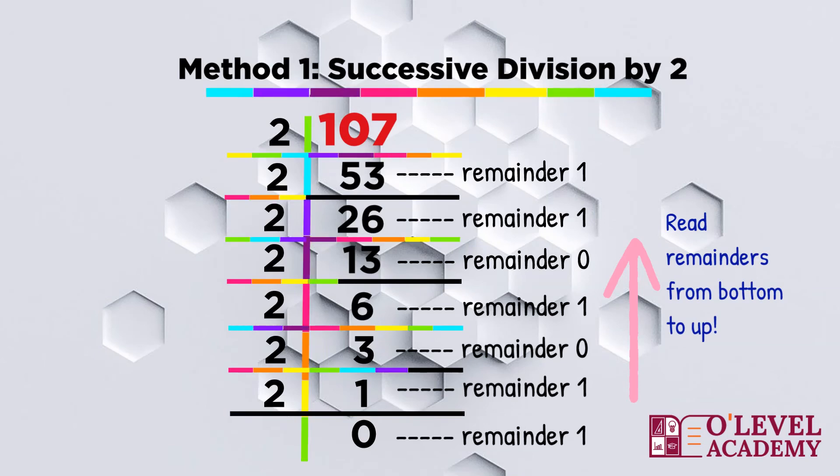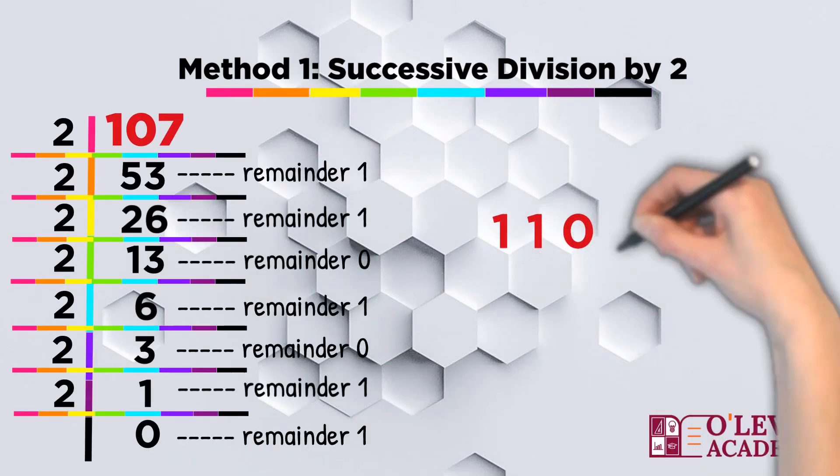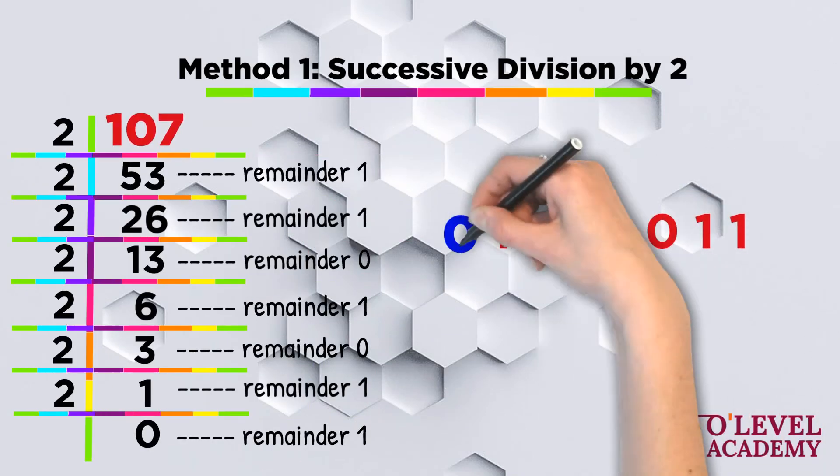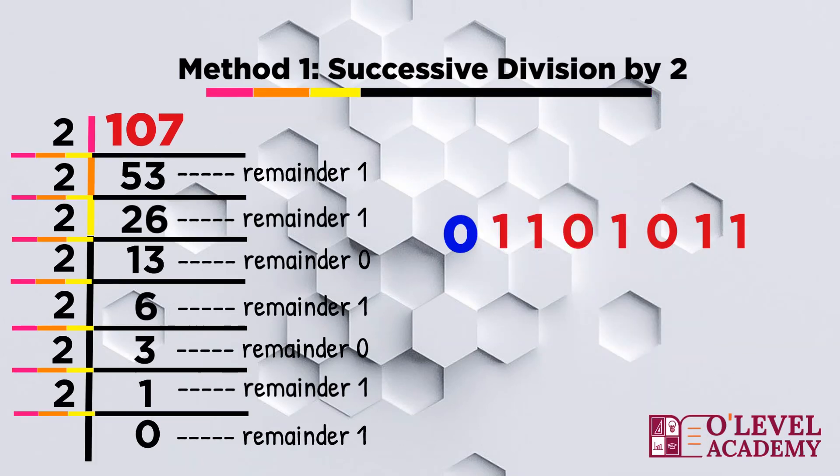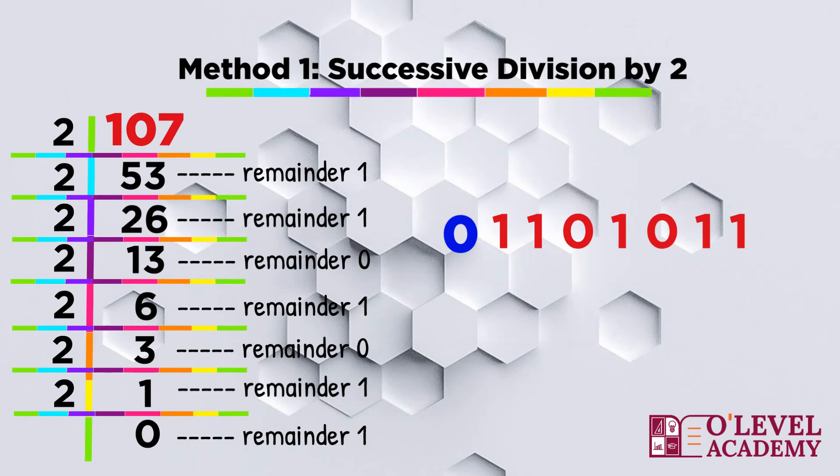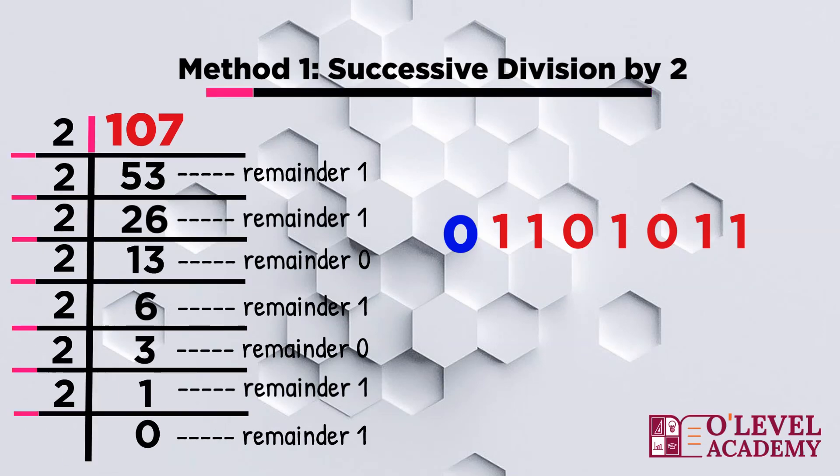Now to find out the binary representation, read remainders from bottom to up. Reading remainder from bottom to up gives us 1101011 which is 7 bits. To make it an 8-bit number, we will add 0 on the left-hand side.